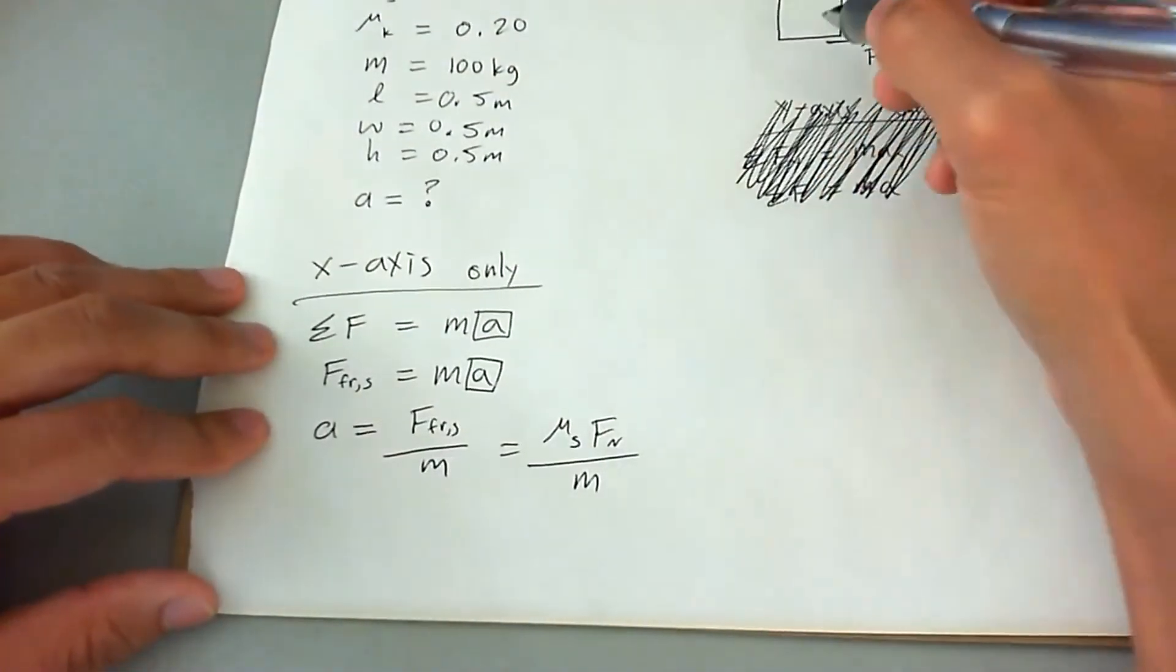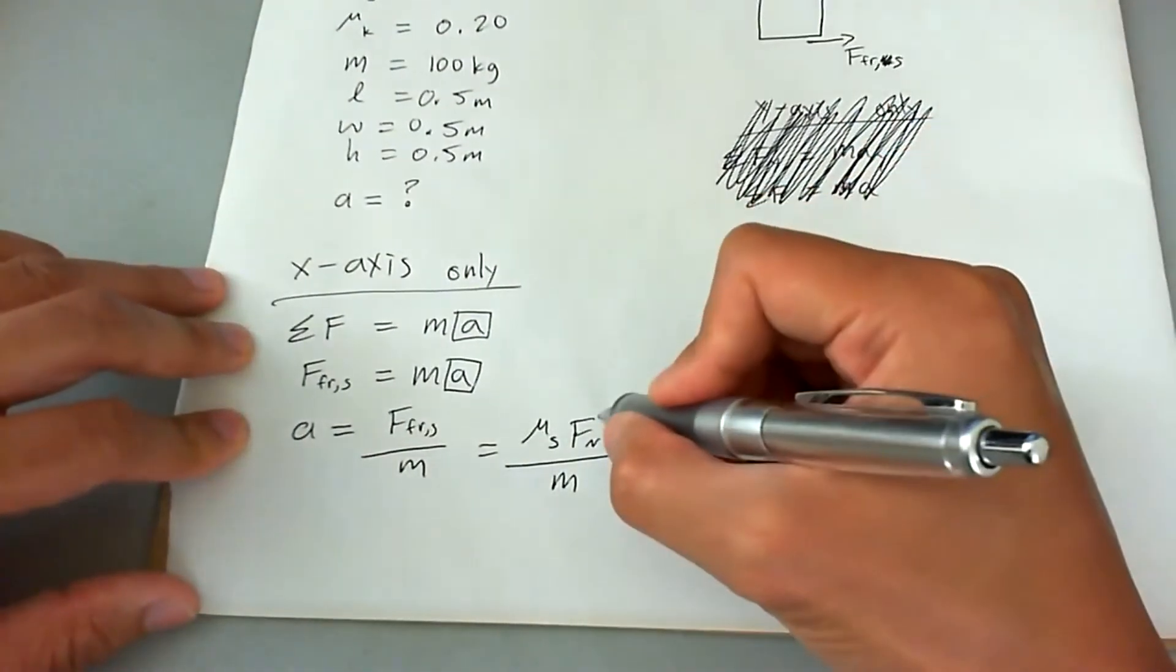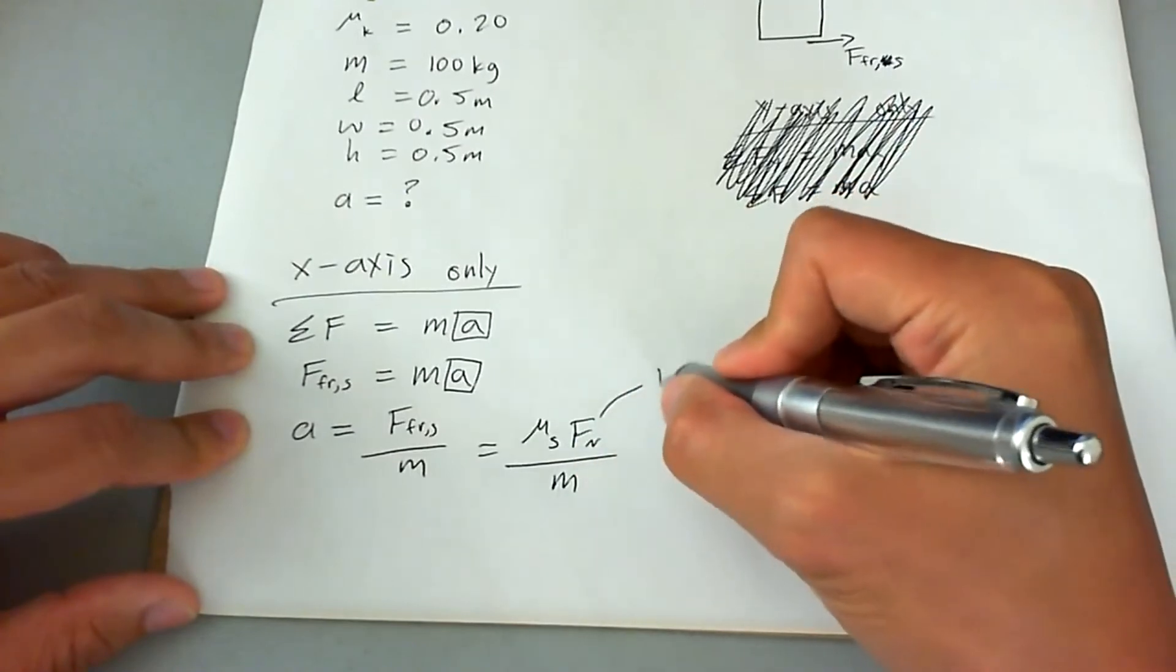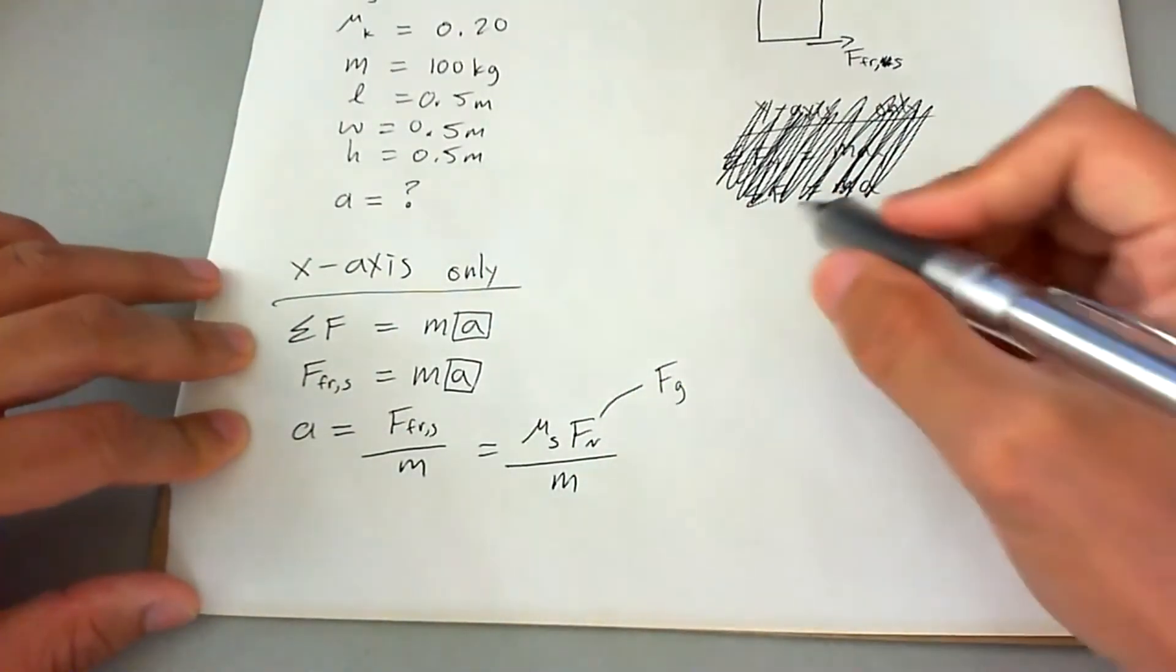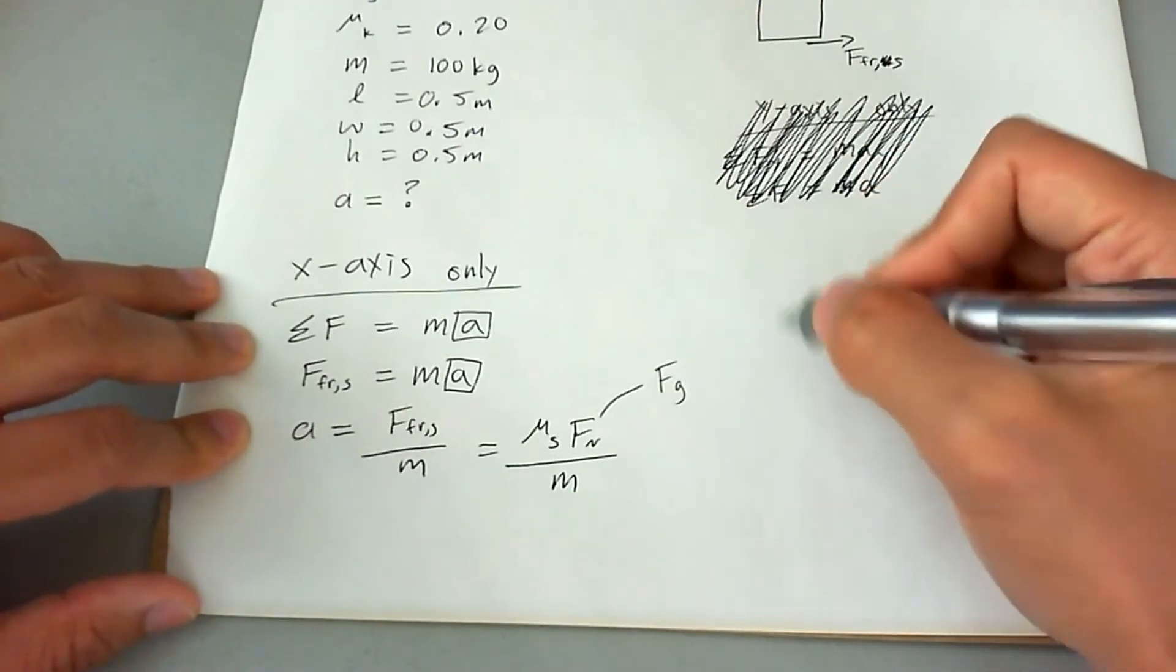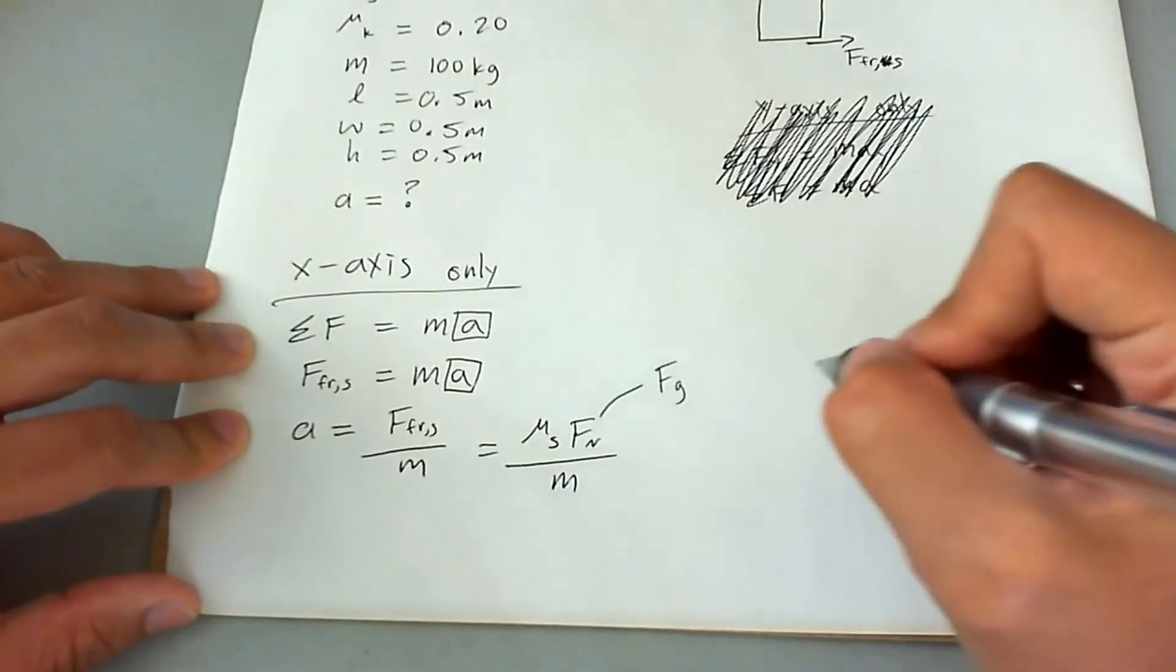Since the box is on a horizontal flat surface, then we can say that normal force is equal to the gravitational force. Since it's not moving up or down, the two forces cancel each other out. So they have to be equal.